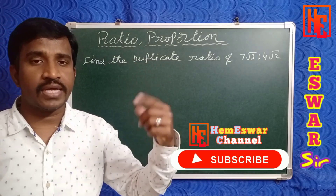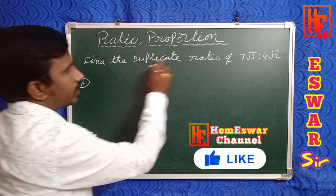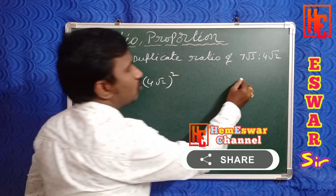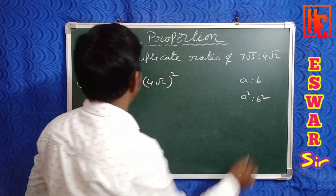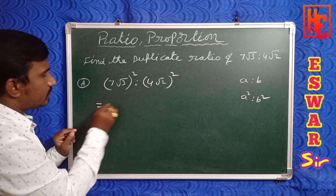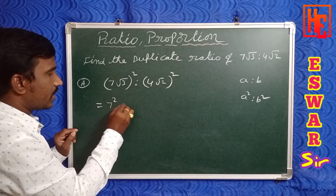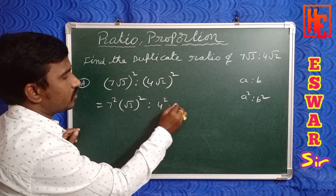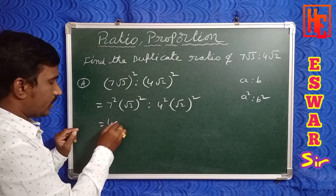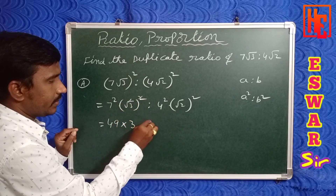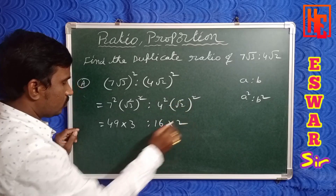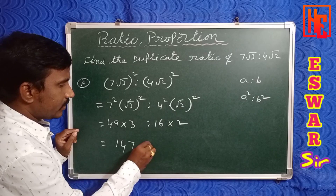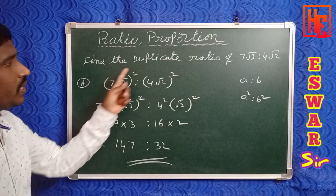What is the duplicate ratio of 7√3 is to 4√2? Duplicate ratio means square of both terms, so (7√3)² is to (4√2)². Distributing the square: 7² × (√3)² is to 4² × (√2)². So 49 × 3 is to 16 × 2, giving 147 is to 32.